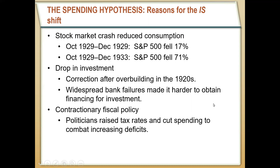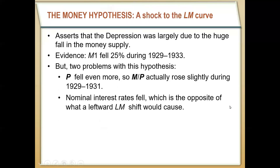Then in the 1960s, two monetary economists — Milton Friedman and Anna Schwartz — looked at the money side of the economy throughout the Great Depression and came up with the money hypothesis: basically, that the Depression was entirely a monetary phenomenon. They looked at old Federal Reserve records and found that the money supply fell by over 25% during the Great Depression, dubbing it the Great Contraction.